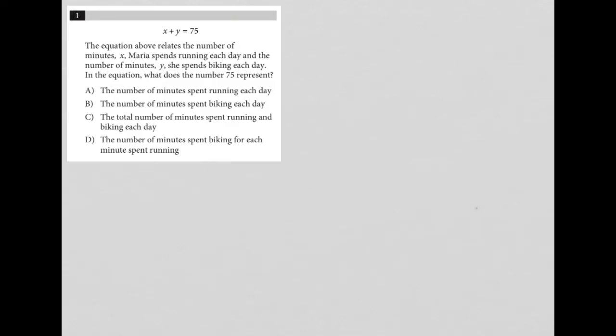So this question says, the equation above relates the number of minutes X Maria spends running each day and the number of minutes Y she spends biking each day. In the equation, what does the number 75 represent?